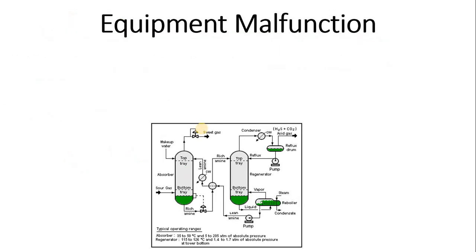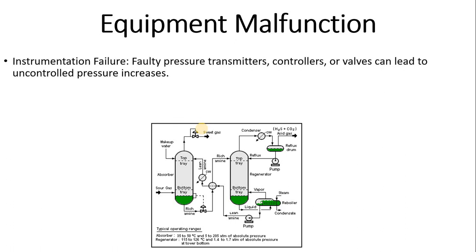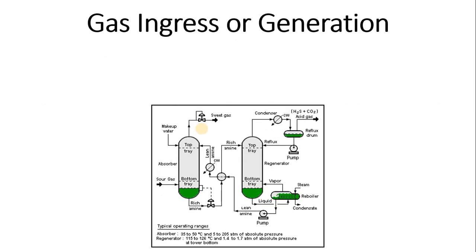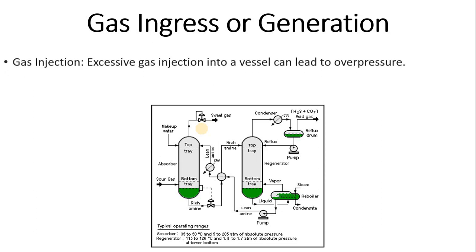Equipment malfunction is another cause. Instrumentation failure — for example, a faulty pressure transmitter showing a wrong reading, or a control valve not working properly — can lead to pressure increase. This happens frequently in industry. Control system failure, such as a DCS failure or local control panel failure, can also be a reason for over-pressurization.